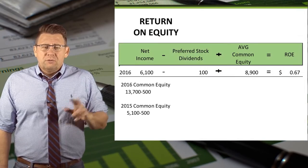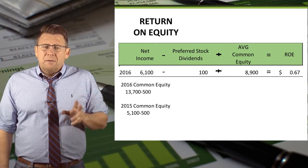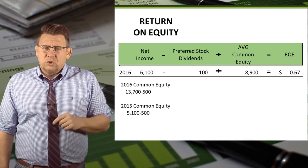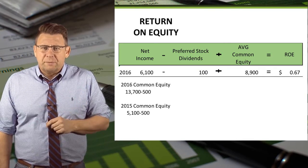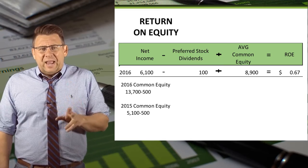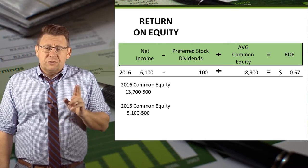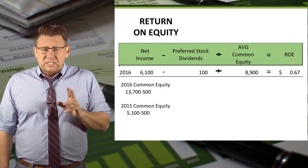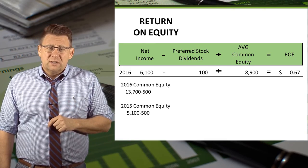For 2016, net income minus preferred stock dividends, which I've assumed to be $100 for this example, divided by average common equity gives us a return on equity of $0.67 for every dollar invested.